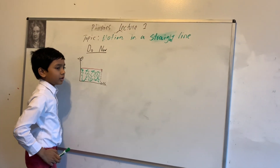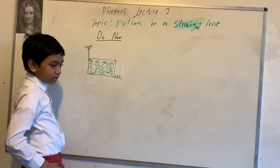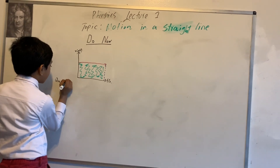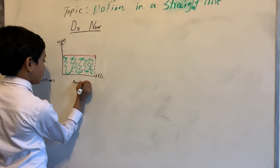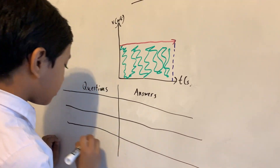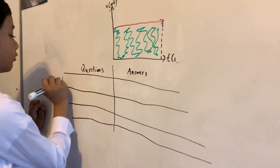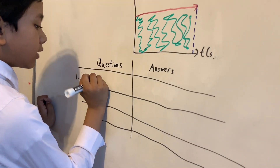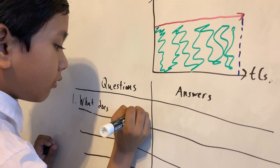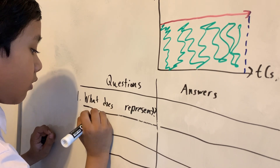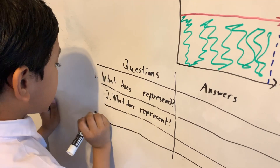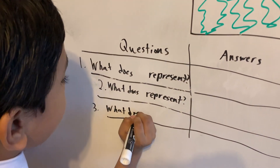I have three questions for you and I will continually give the three answers to them. I have my questions and my answers. Let's make a chart. There's question one, question two, and question three. Question one: what does blank represent? Two: what does blank represent? Three: what does blank represent?